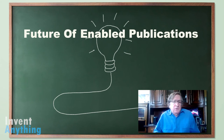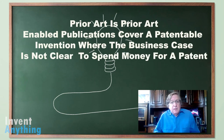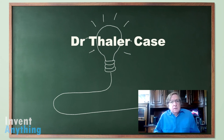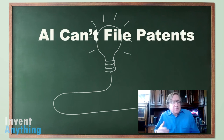Let's go to topic number six: the future of Enabled Publications. Prior art has always been prior art. Enabled Publications are there to stop others from getting patents, especially when the business case isn't there to file patents. This reminded me of Dr. Taylor, who created two inventions with an AI machine — the machine actually invented the inventions — and he decided to file those as patents. Dr. Taylor got involved with the UK and US patent offices to debate whether AI machines could invent. It's called the Dabus case. The patent office stated that their rules require a human to invent, so they did not allow his AI inventions to be considered.